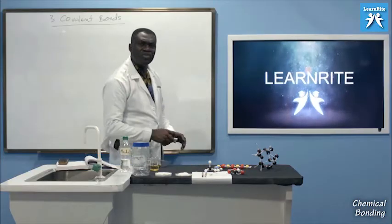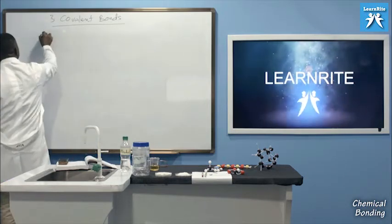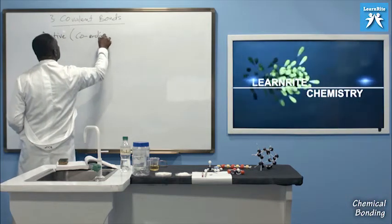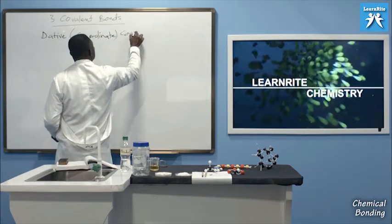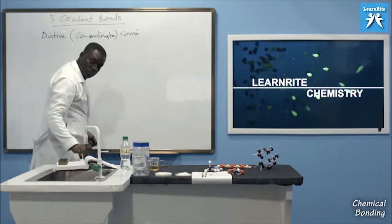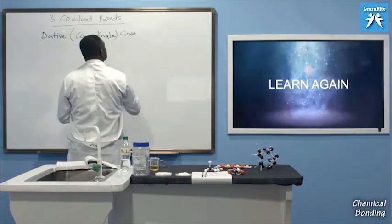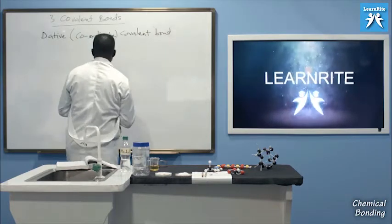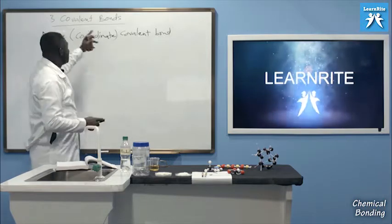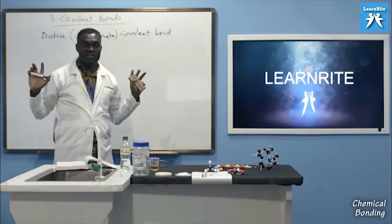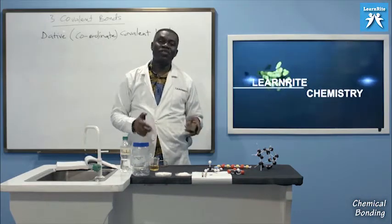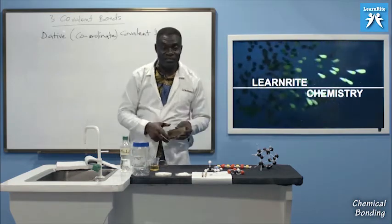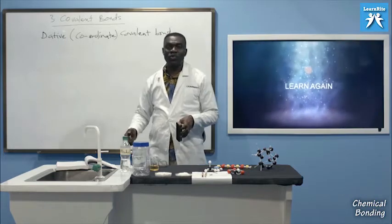Today we are going to introduce a new term: dative covalent bond, also called coordinate covalent bond. The word 'covalent' is there, which means there will be sharing of electrons. The word 'dative' is an adjective added to describe a specific type of covalent bond. We are going to explain what dative means in chemistry.